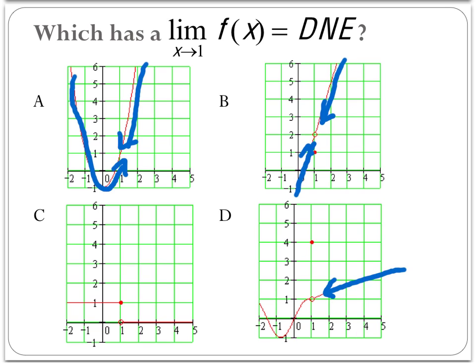Choice D — kind of a similar idea. As I trace it from the right side and the left side, I can see that the graphs again match up, and so therefore the limit exists. Again, the answer is way up here. There's a hole there, some strange behavior, but the limit does exist.